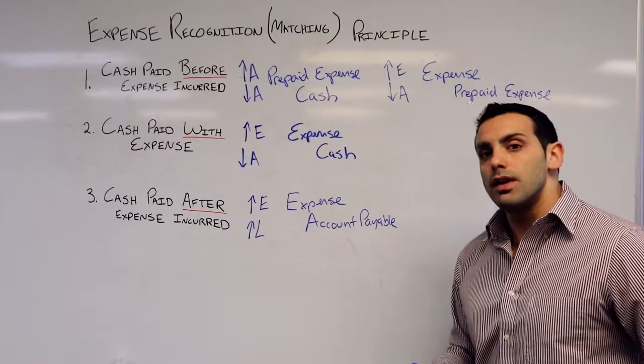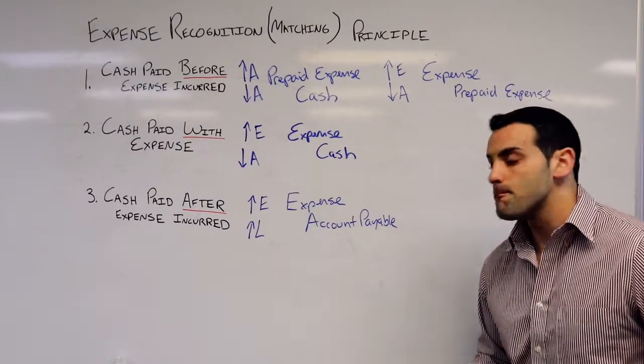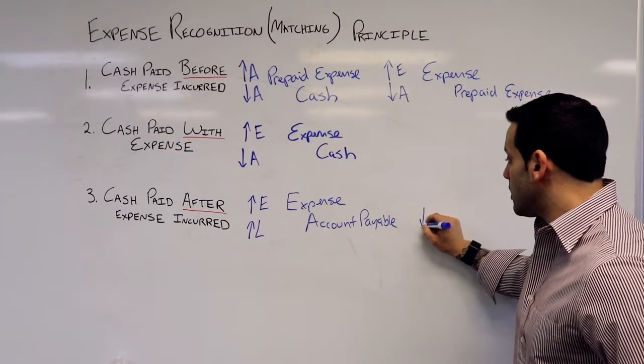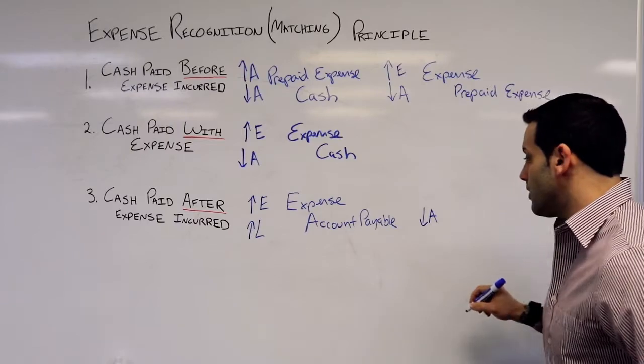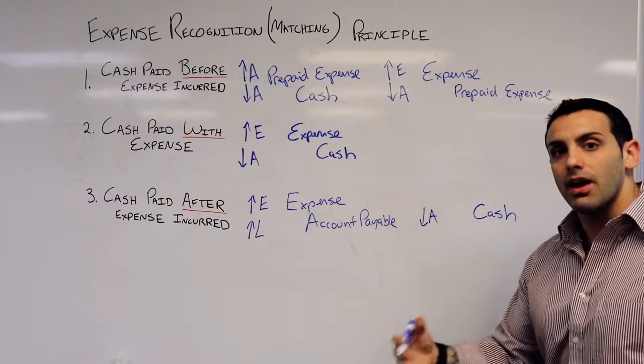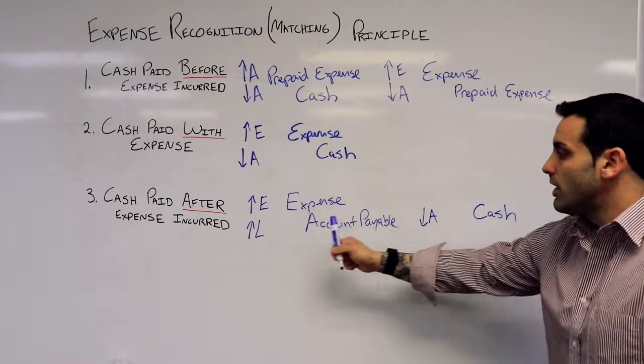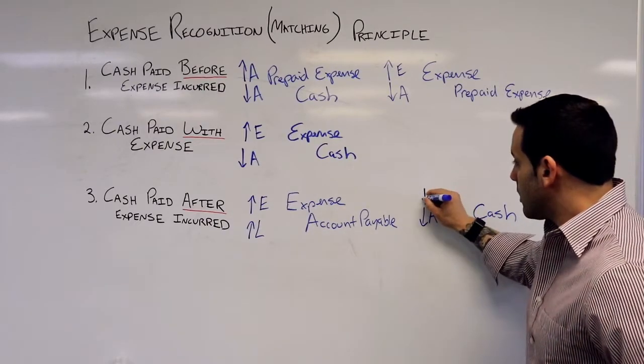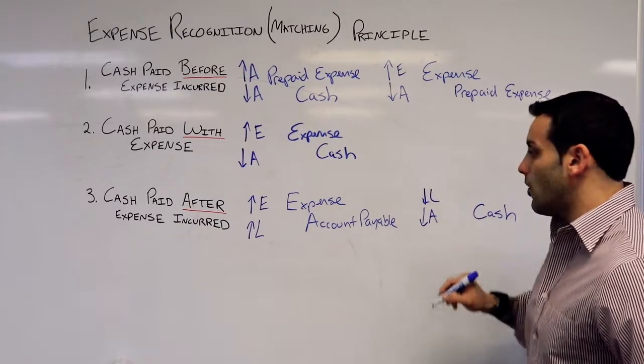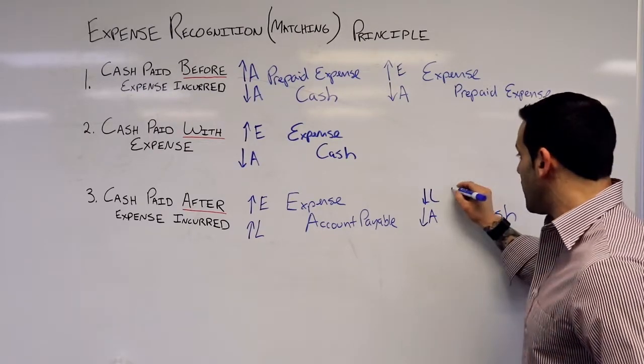When I do get around to paying this bill, I am going to decrease assets. We'll start with that, with a credit to cash because I'm paying out cash. And now my debit is going to decrease or kill this liability, the payable with the debit.